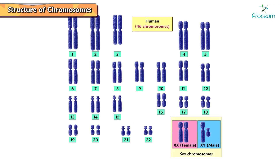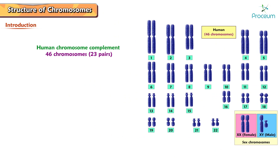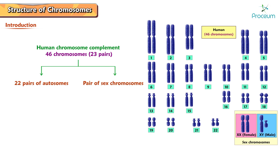The human chromosome complement has 46 chromosomes in 23 pairs, with 22 pairs of autosomes and a pair of sex chromosomes.